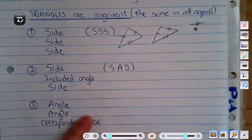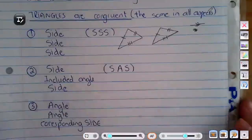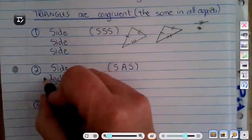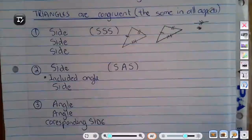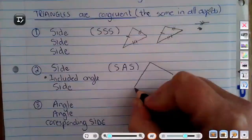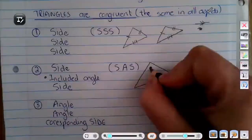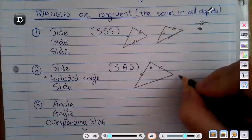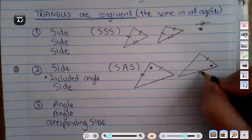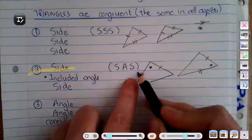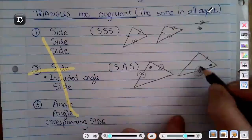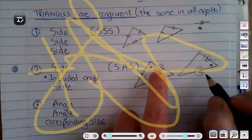The second rule is Side-Angle-Side. The included angle is very important — if the angle is not in between the two sides, you can actually draw two different triangles. I've got a side labelled with two stripes and one stripe on each triangle, and the angle must be formed by those two sides.